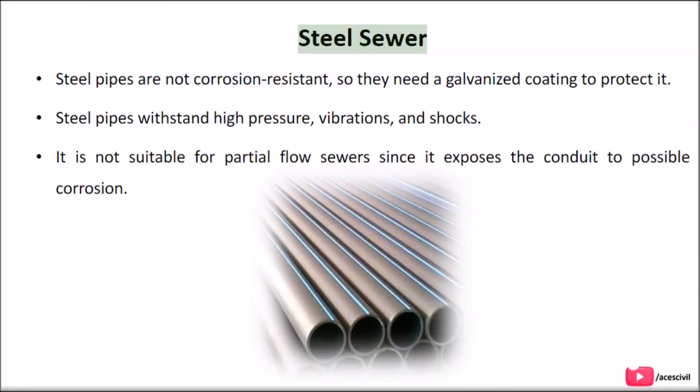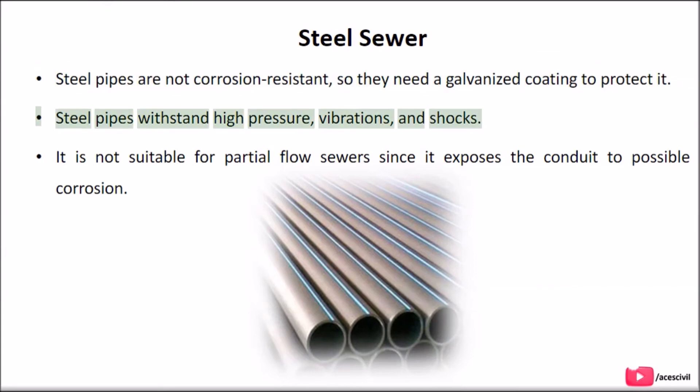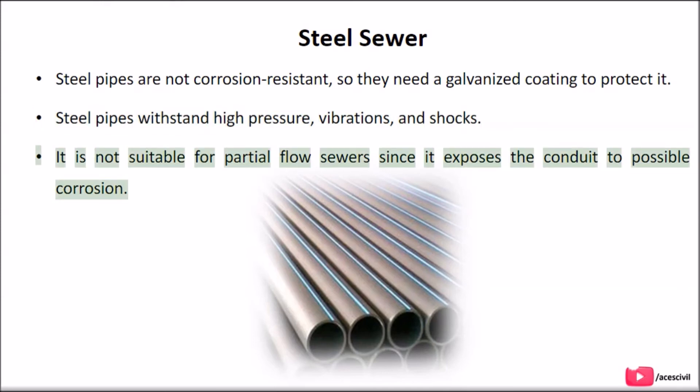Steel Sewer: Steel pipes are not corrosion resistant, so they need a galvanized coating to protect them. Steel pipes withstand high pressure, vibrations, and shocks. However, they are not suitable for partial flow sewers, since this exposes the conduit to possible corrosion.